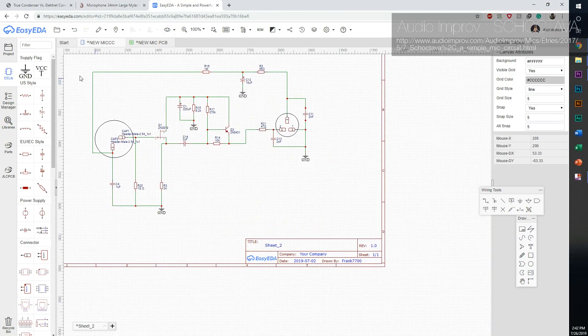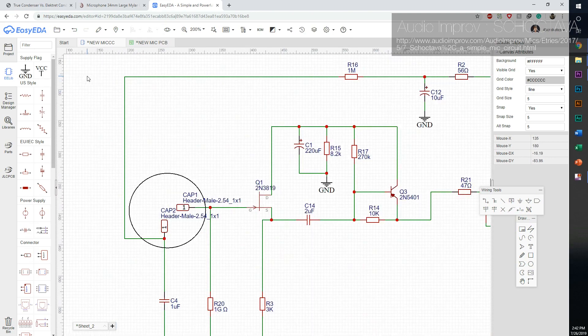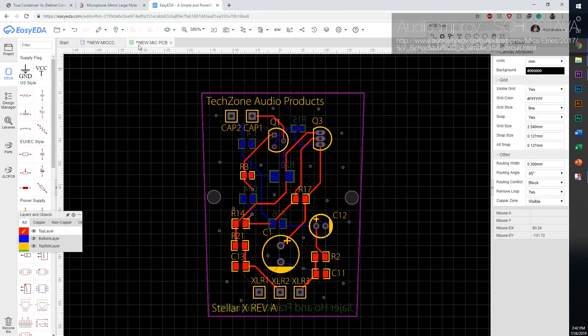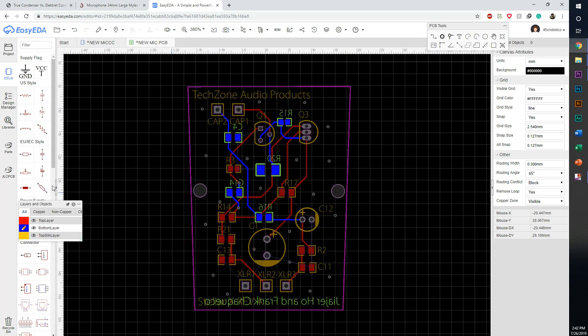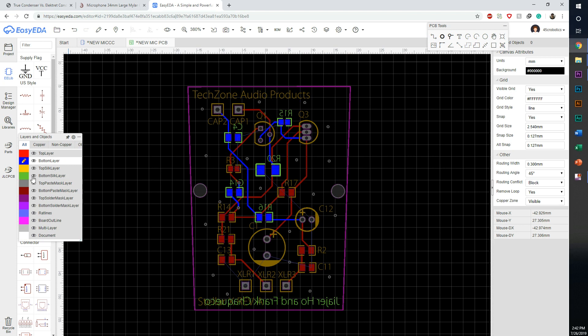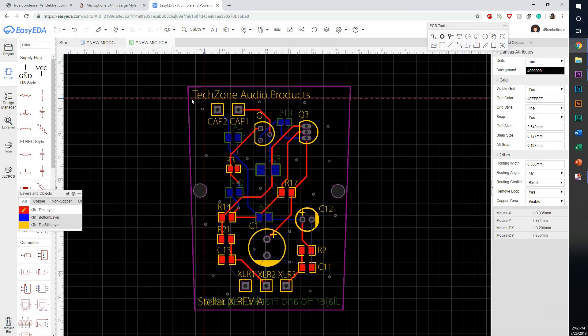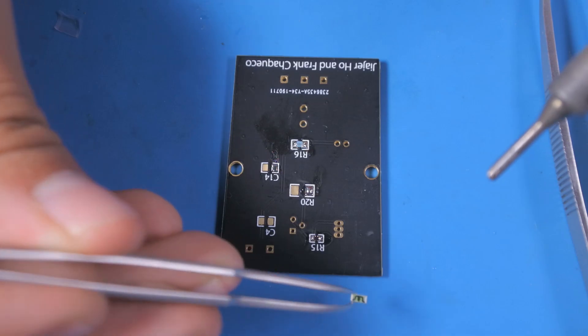All condenser microphones need a circuit to provide power for the capsule and convert the small capacitance changes from the capsule into audio signals. Using EasyEDA, we laid out the components of our schematic. The schematic is based on an open source circuit from AudioImprov.com, which is a modified version of the Octava and Schepps circuit. After laying out the board and ordering them from JLCPCB, it's time to assemble it.